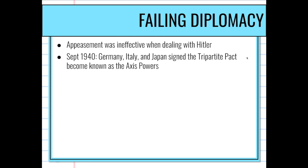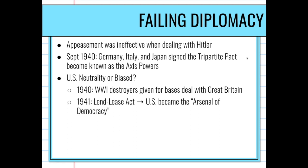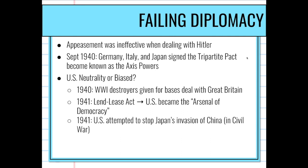The United States starts to see that diplomacy is failing and appeasement is ineffective. Germany, Italy, and Japan sign the Tripartite Pact, becoming known as the Axis Powers. The US starts leaning toward the Allied side — providing old destroyers to Great Britain by 1940, and by 1941 FDR signs the Lend-Lease Act, declaring the United States will become the 'arsenal for democracy' to help those protecting democracy.